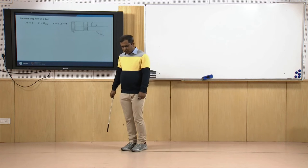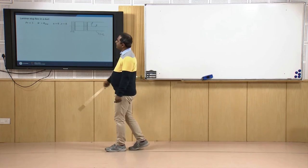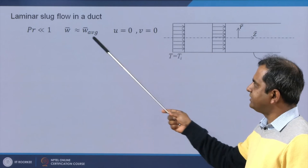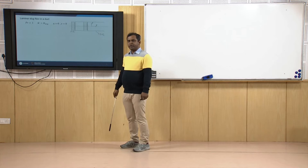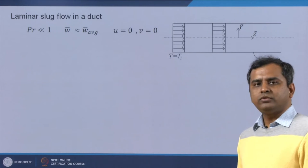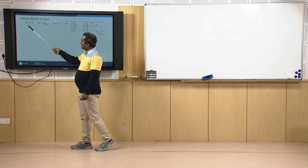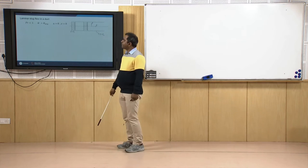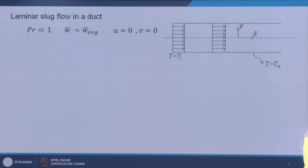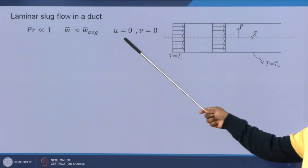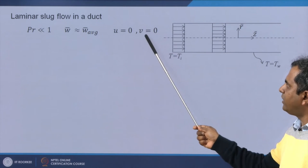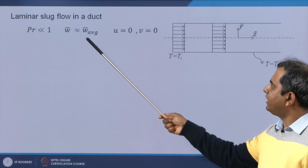In slug flow, velocity is more or less constant: W equals W_average. The thermal boundary layer dominates over the velocity boundary layer, so throughout the thermal boundary layer W equals W_average. This happens mainly for low Prandtl number cases. Since W equals W_average, there is no cross-directional velocity — no radial velocity. U and V are zero; only the axial velocity remains, and it is constant.